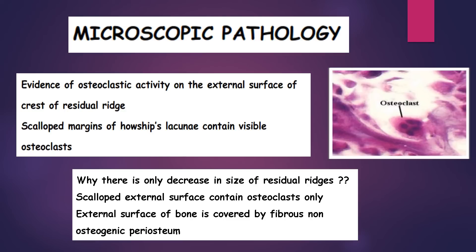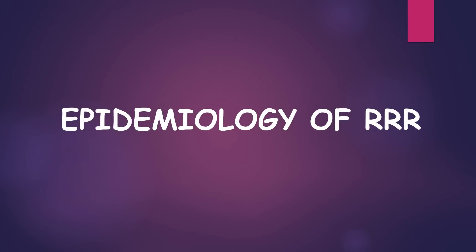Microscopic studies have revealed evidence of osteoclastic activity on the external surface of the crest of residual ridges. There are scalloped margins of Howship's lacunae containing visible osteoclasts. There is only a decrease in the size of residual ridges because the scalloped external surface contains osteoclasts only, and the external surface of bone is covered by fibrous non-osteogenic periosteum.